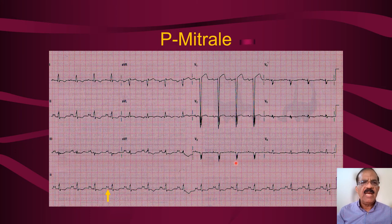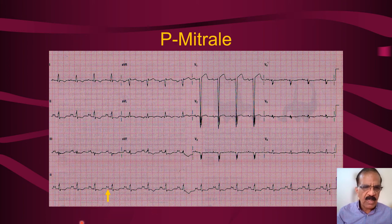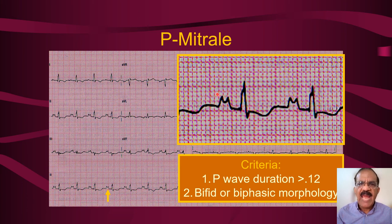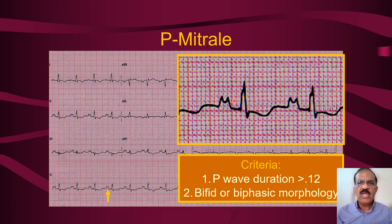This ECG shows P mitrale. If you look at this P wave, it is bifid. If the P wave is broader than 0.12 seconds — three small squares — and is bifid, particularly if the second deflection is bigger than the first, this indicates left atrial enlargement. The commonest cause of left atrial enlargement is mitral valve disease. This is the P mitrale pattern you may see on ECG.